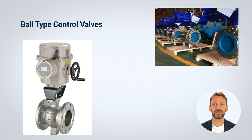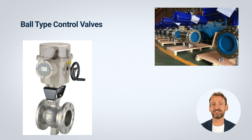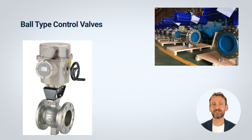Flow characteristics: ball valves offer good flow control and can provide bidirectional shutoff in some applications. They typically have a lower pressure drop than other valve types and can handle a wide range of fluids and temperatures. Function: ball valves are typically used for on-off service, but can be used for throttling if they have a specially shaped ball. They are well suited for applications requiring tight shutoff and high-pressure capabilities.